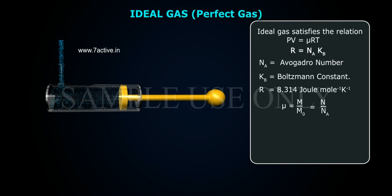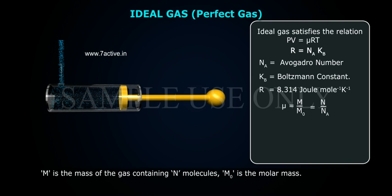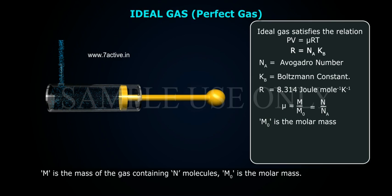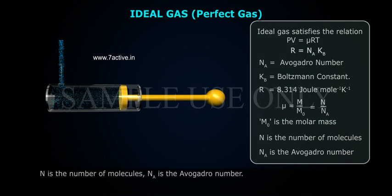μ = M/M₀ = N/Na, where M is the mass of the gas containing N molecules, M₀ is the molar mass, N is the number of molecules, and Na is the Avogadro number.